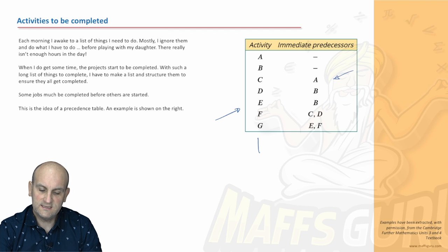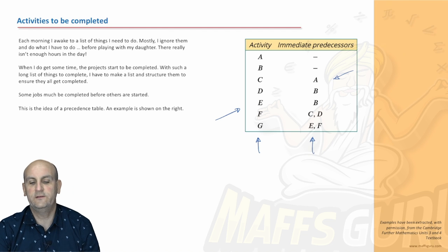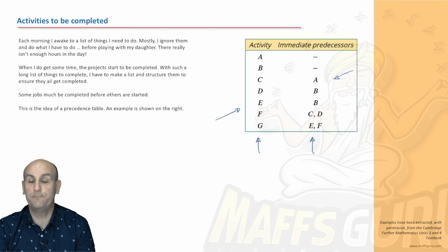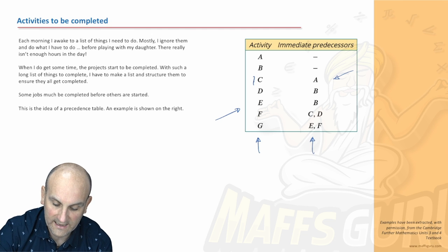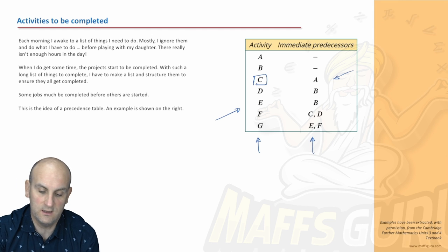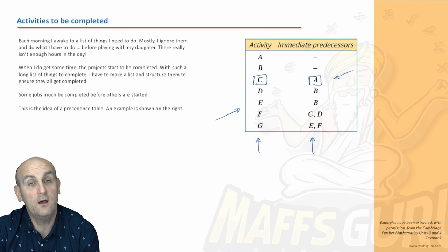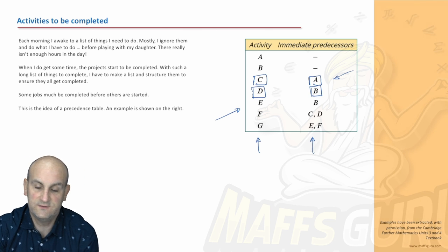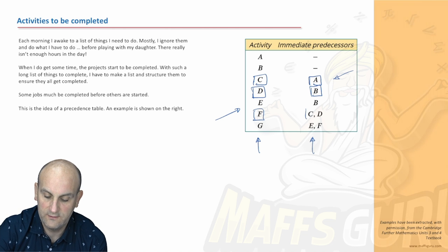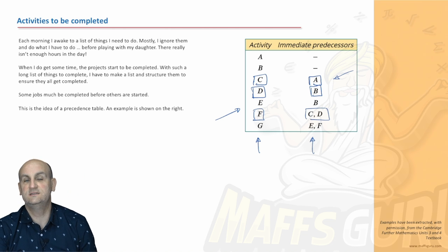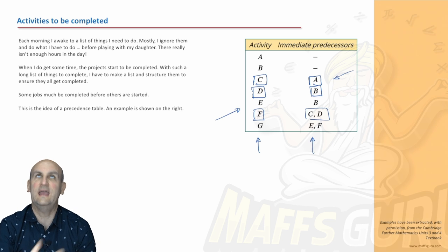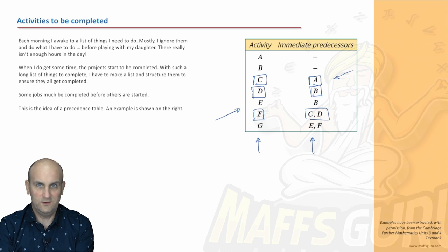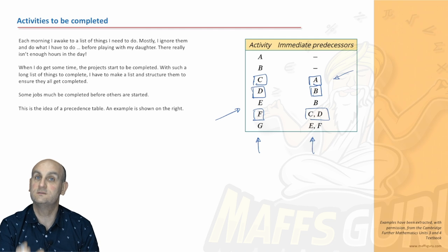These are my seven activities. The 'immediate predecessor' column tells you the order — for example, activity C cannot start until activity A is complete, activity D cannot begin until activity B is complete, and activity F can't be started until C and D are both complete. So what do we do with this precedence table? We draw something called an activity network.